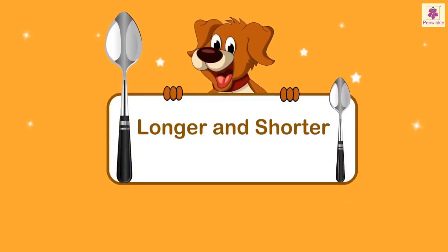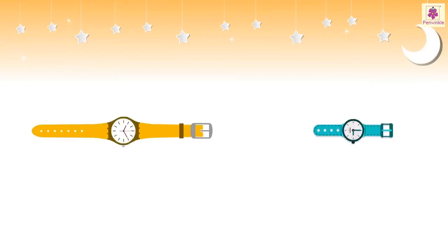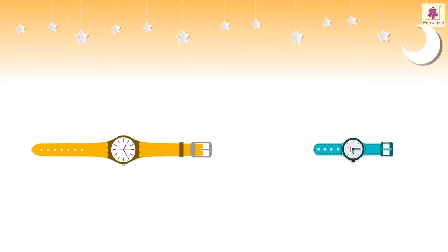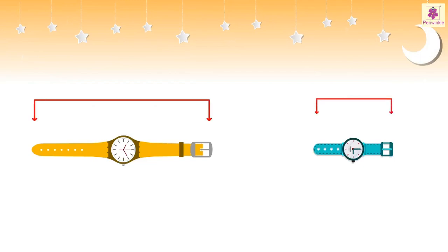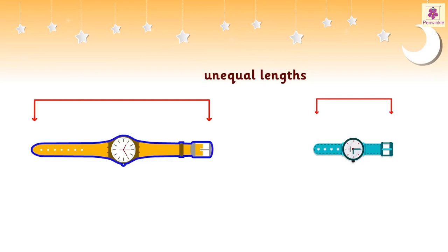Longer and shorter. Now, we shall compare two objects on the basis of their lengths. When we have two objects of unequal lengths, one object is longer and the other is shorter.